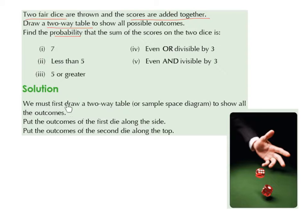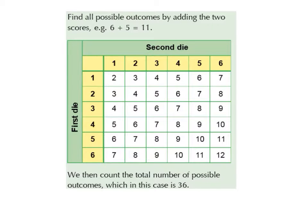We must first draw a two-way table or sample space diagram to show all the outcomes. Put the outcomes of the first die along the side, and put the outcomes of the second die along the top. So we have our first die — the options are 1, 2, 3, 4, 5, and 6.